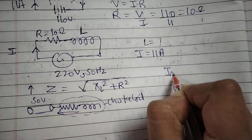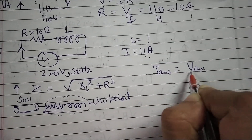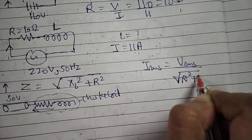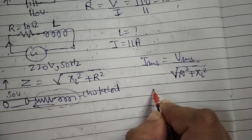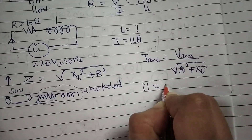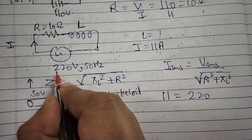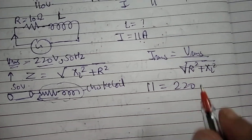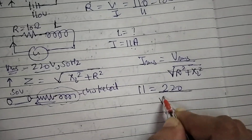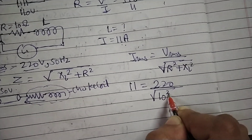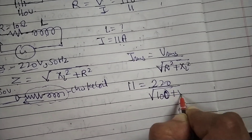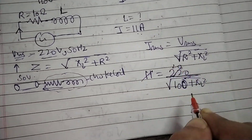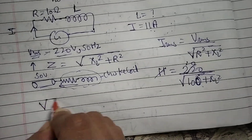Now the formula is: I = Vrms divided by the square root of R squared plus XL squared. Here I = 11 ampere and Vrms = 220 volt. So: 11 = 220 divided by the square root of (10 squared plus XL squared).